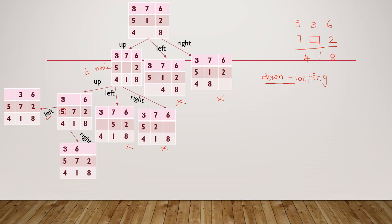Comparing these two states with the goal state: for the first one, the first row has 3 and 6 in matching positions, and the second row has 7 and 2 matching. For the second state, the second rows are the same but the first row has 3 and 6 in different positions compared to the goal state — meaning more moves would be needed. So this second state is not a promising move; let us take the first node as the next E node.